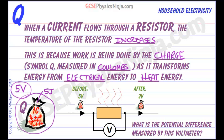That charge will flow into a resistor and it will give up some of its energy as heat. It may not lose all of it — it may come out the other end with a little bit remaining. So this coulomb here is at 2 volts, meaning it's got 2 joules left.